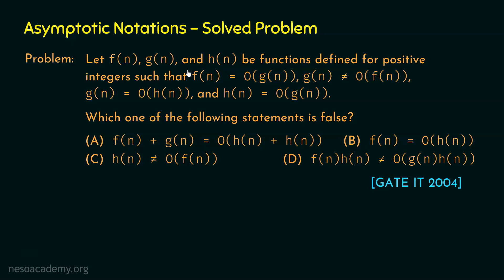According to this question, we need to assume f(n), g(n) and h(n) according to the given conditions. We have a total of four conditions. The first two conditions establish the relationship between f(n) and g(n): f(n) = O(g(n)) and g(n) ≠ O(f(n)). The last two conditions establish the relationship between g(n) and h(n): g(n) = O(h(n)) and h(n) = O(g(n)).